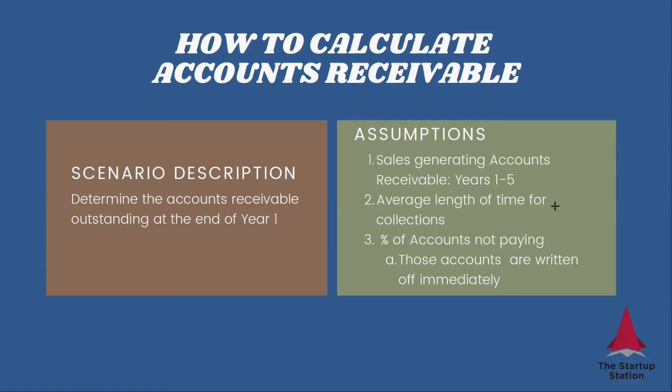If you're thinking about how to project the accounts receivable for your business, what you need to know is the sales that generate those receivables for years one to five. You also need to determine the average length of time for collections — this is the length of credit. This will typically be based on whatever is acceptable in your industry, and it can range anywhere from 30 days for smaller businesses and smaller projects to 180 days for bigger projects and bigger companies.